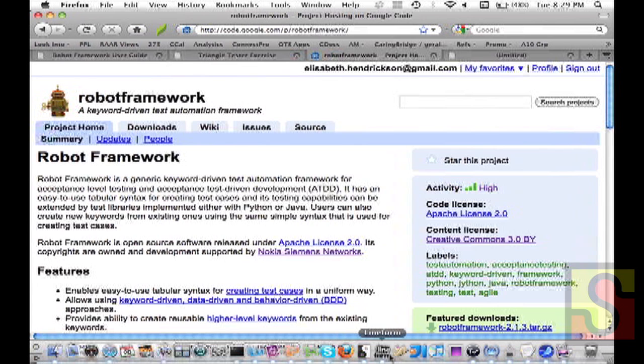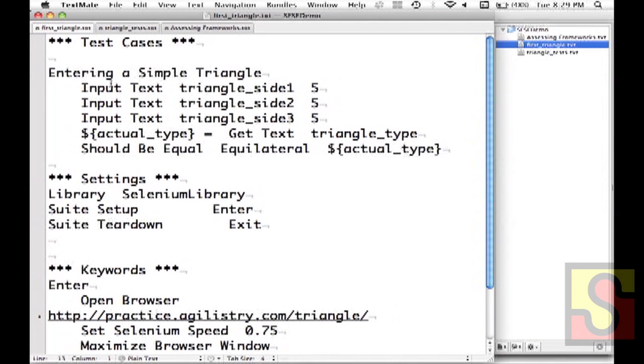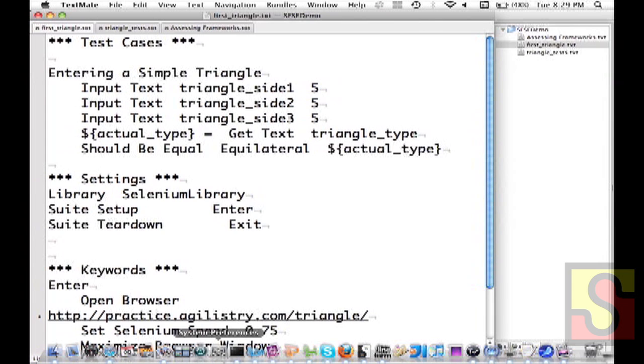Going back to expressing your expectations. Here we see a very simple test case that is using Selenium keywords that I am assuming are going to be familiar to most of you—inputting text into an element with ID triangle side one. We're going to input the value five, input another value, input another value, get text out of the thing that's got the ID triangle type and then check to see if they should be equal. That's a built-in Robot Framework keyword.